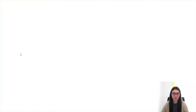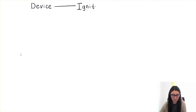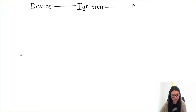Hi everyone, today I'm going to walk you through the tag historian in Ignition. I'm going to start with one of Ignition's main architectures. Let's say that we have a device, which can be a PLC or MQTT, and we have successfully connected it to an Ignition server. The next step is to store the tag values in an SQL database, which will be the place where we store the historical data.